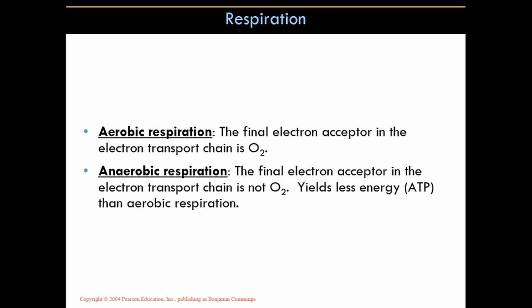We completed aerobic respiration where the final electron acceptor was oxygen. Now we're going to look at anaerobic respiration where the final electron acceptor is not oxygen. This yields far less energy — far fewer ATPs are produced from anaerobic than from aerobic. But anaerobic will produce ATPs when oxygen levels are very low or virtually non-existent.